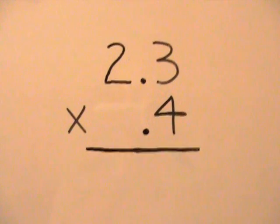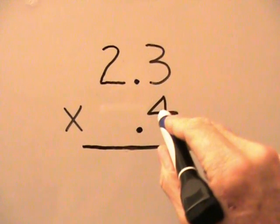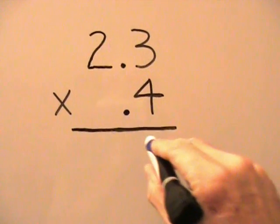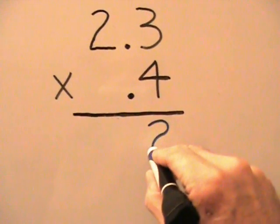We're going to start in the ones column, take our 3, multiply it by 4 to get 12. We put down our 2, which represents the ones.